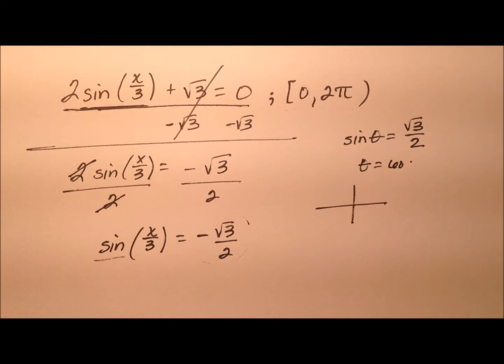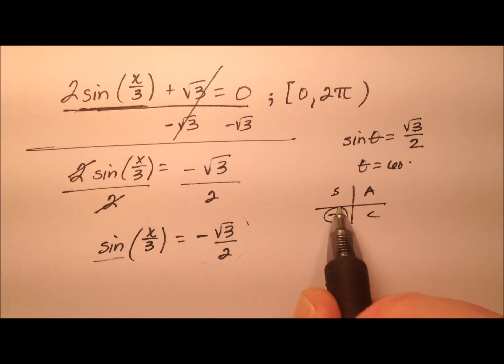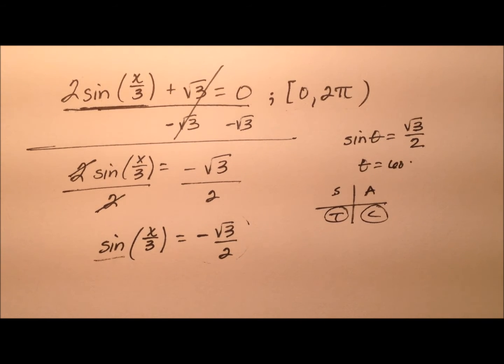So how about our quadrants now? Where is sine going to be negative? Well, sine is positive in the first and second, so that means it's negative in the third and fourth.